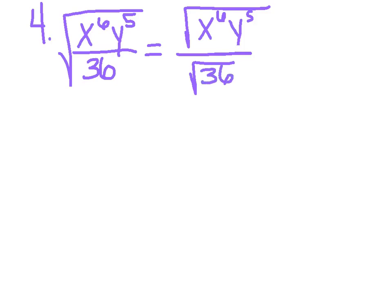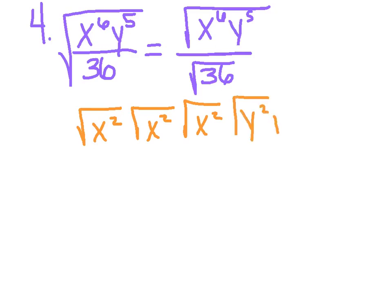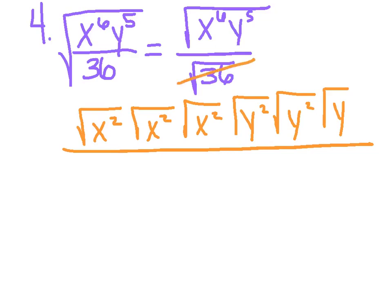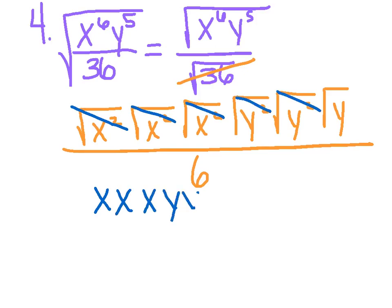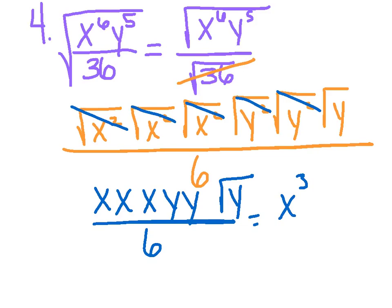I'm just going to take my time and break down the top and the bottom. For x to the 6th, looking for perfect squares: I've got x squared, x squared, x squared — a total of 2, 4, 6. Y to the 5th is going to be y squared, y squared, and just a plain y — that's 2, 4, and 1 to make 5. And I actually know the square root of 36 is the number 6. So cleaning this up, this becomes x, x, x, y, and y. I'm going to leave one as a radical y, all over 6, for a final answer of x cubed y squared times radical y, all over 6.